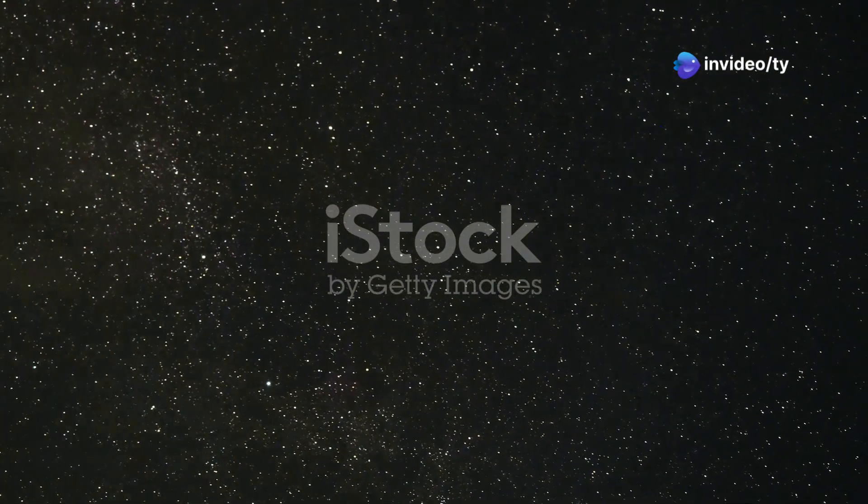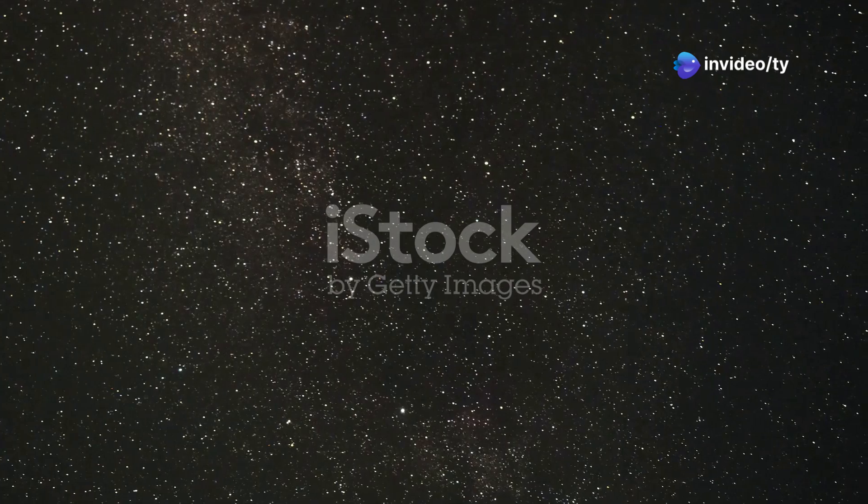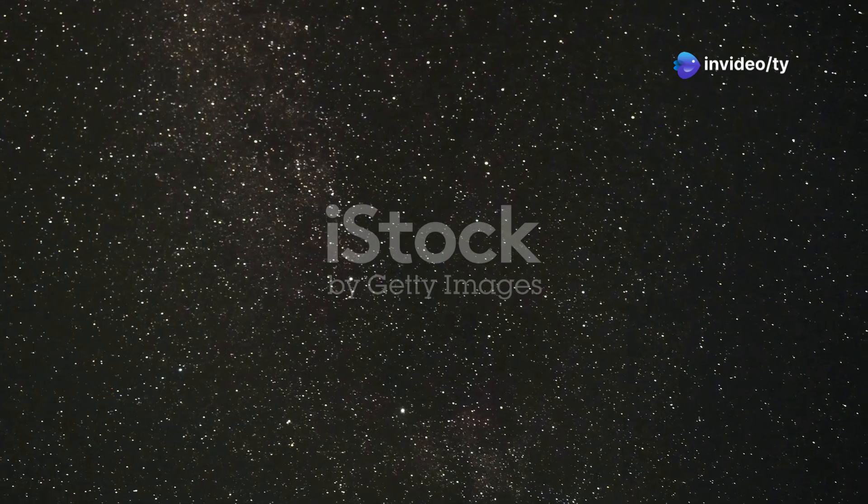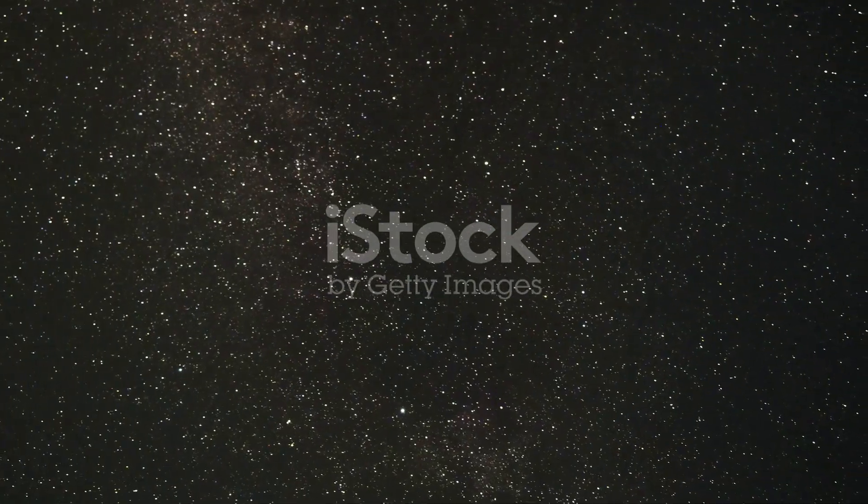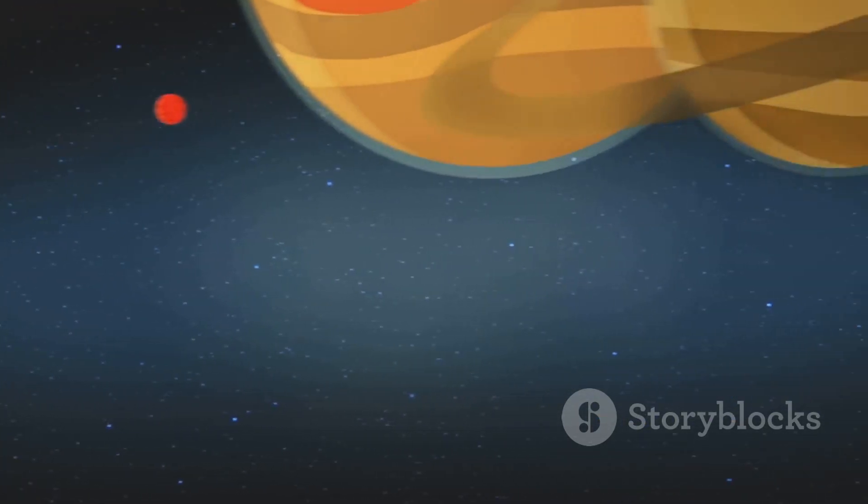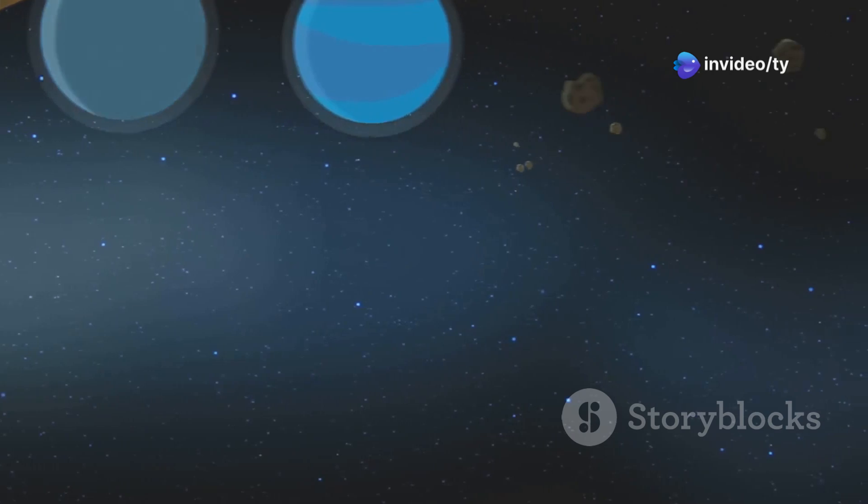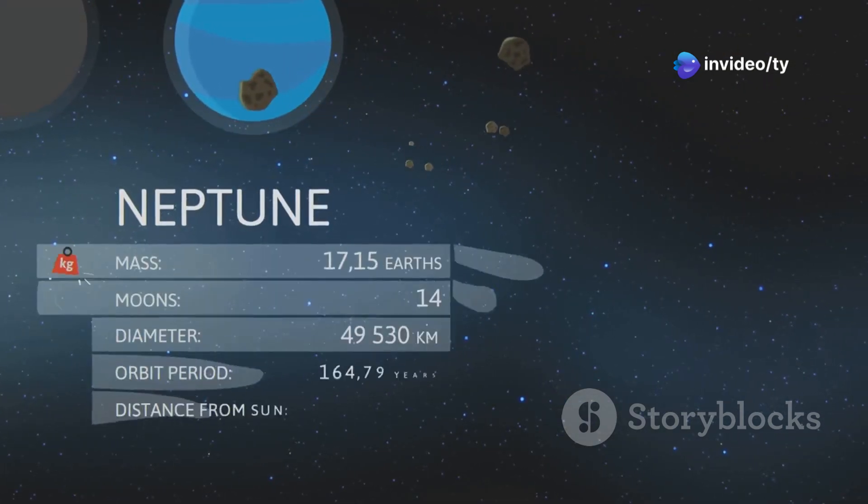Our first stop takes us to the constellation Cygnus, some 1,400 light years away. This constellation, often referred to as the Northern Cross, is a prominent feature in the summer sky of the Northern Hemisphere. It is home to many fascinating celestial objects, but one of the most intriguing is a distant exoplanet that has captured the imagination of scientists and space enthusiasts alike. There, orbiting a star remarkably similar to our own Sun, lies Kepler 452b.